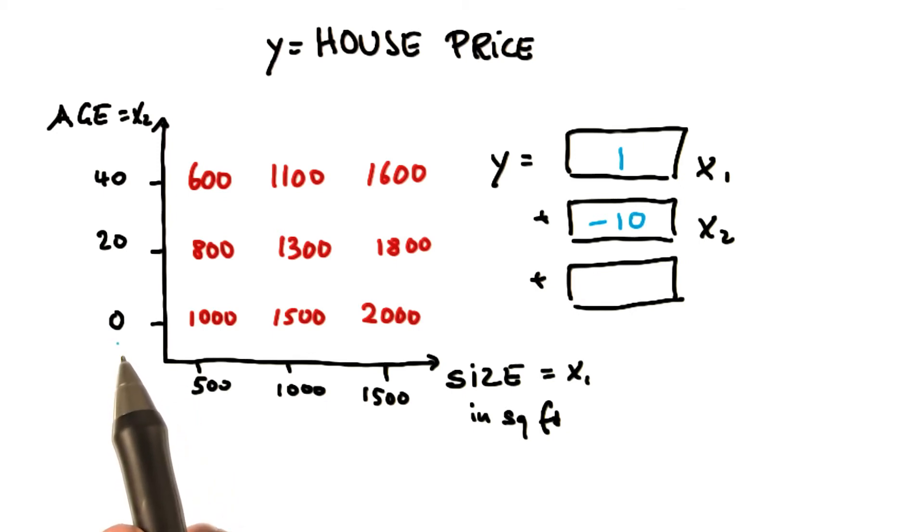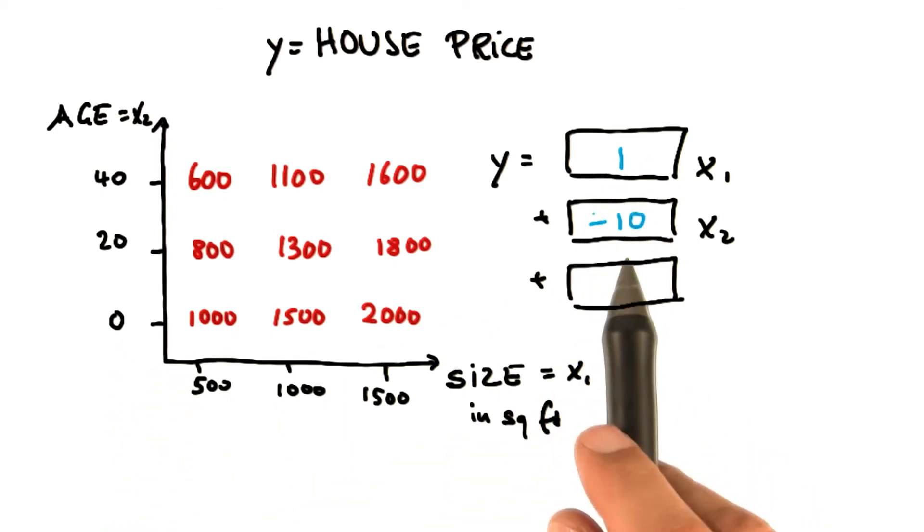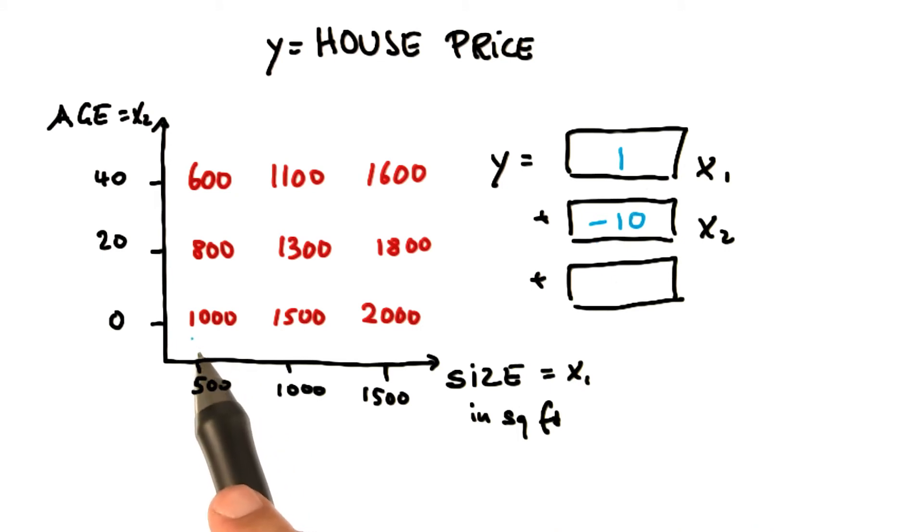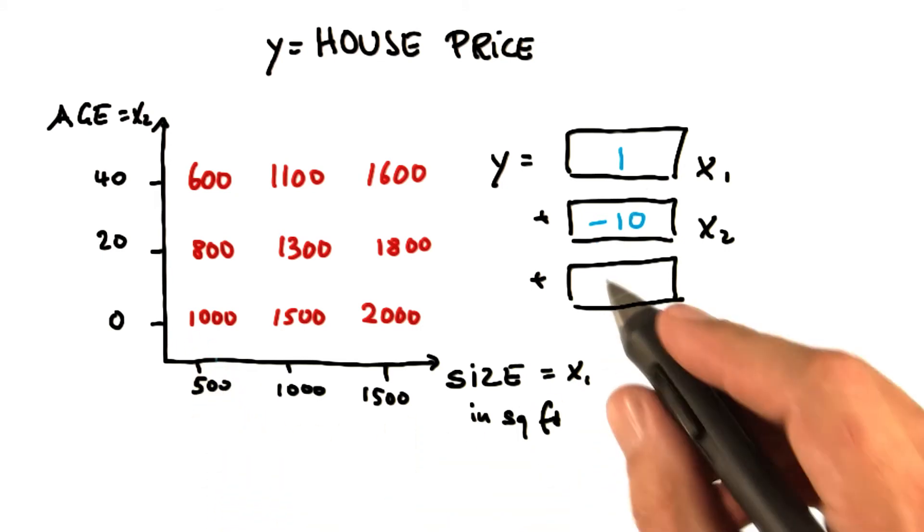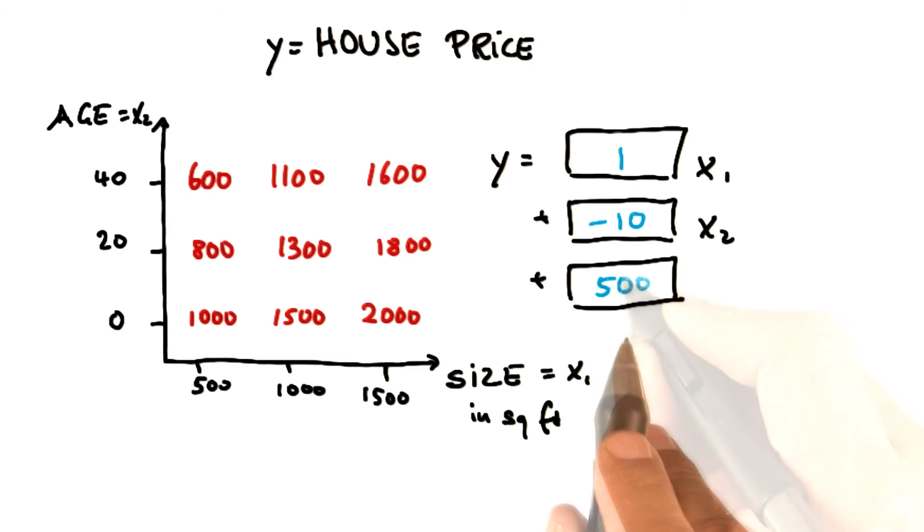0 times minus 10 is 0. So we would, with these two coefficients, only get 500 over here. We need to get all the way to 1,000, so we have to add 500 to it. And that's the correct result.